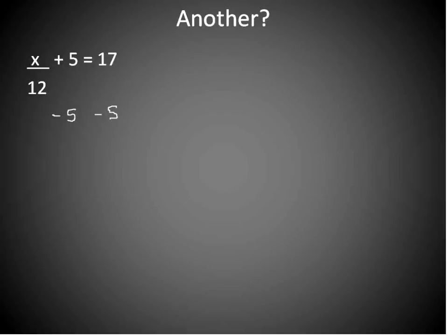Positive 5, negative 5, they cancel each other out. 5 minus 5 is 0. So I'm left with just x/12 is equal to 17 minus 5, which is 12. All right.